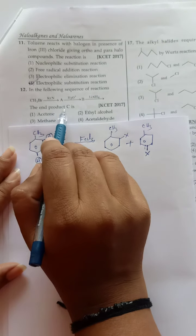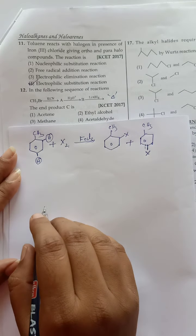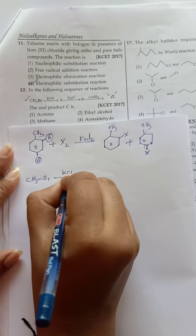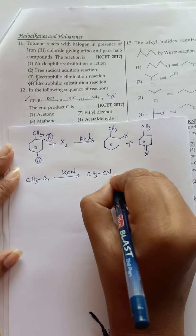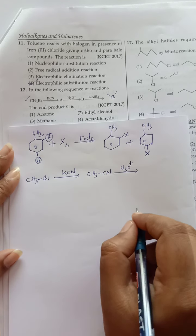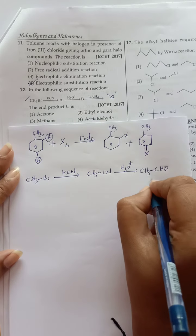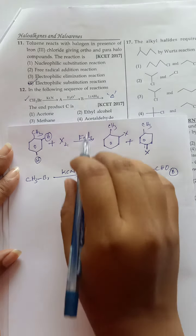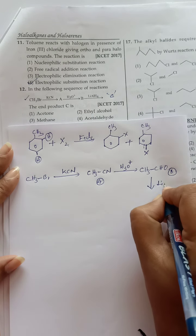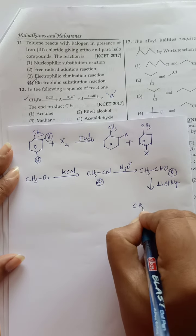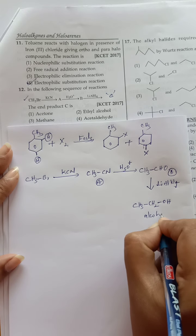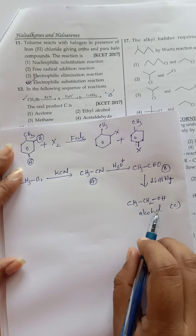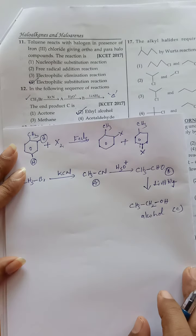In the following sequence of reactions, what is C? Methyl bromide (CH3Br) reacts with KCN to give CH3CN (methyl cyanide) — this is A. When CH3CN undergoes acidic hydrolysis, we get acetaldehyde CH3CHO — this is B. Now B undergoes reduction with lithium aluminium hydride (LiAlH4). Acetaldehyde is reduced to CH3CH2OH — that is ethanol. This is C. So the answer is ethanol (ethyl alcohol), option 2.